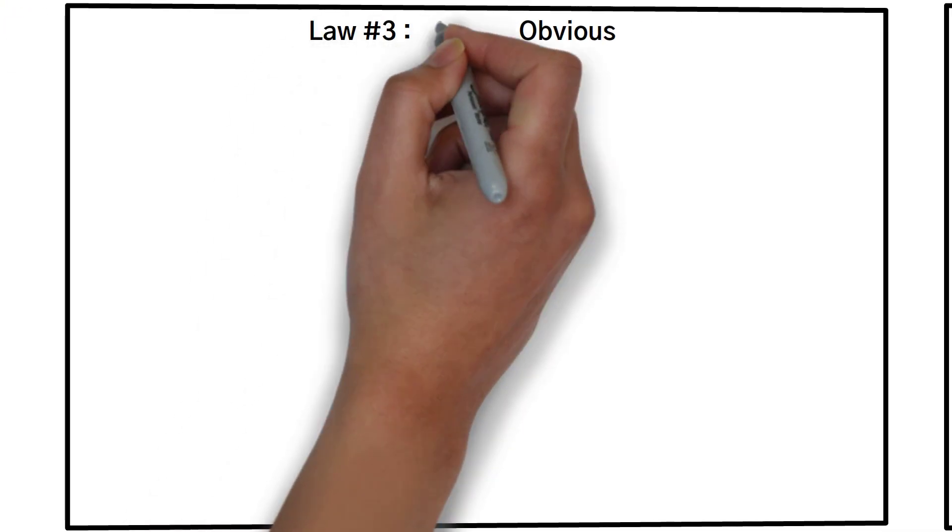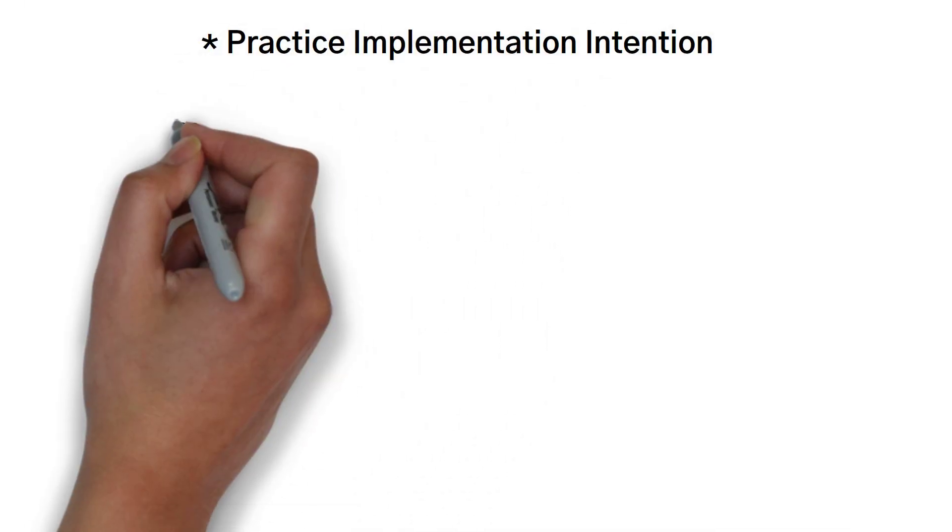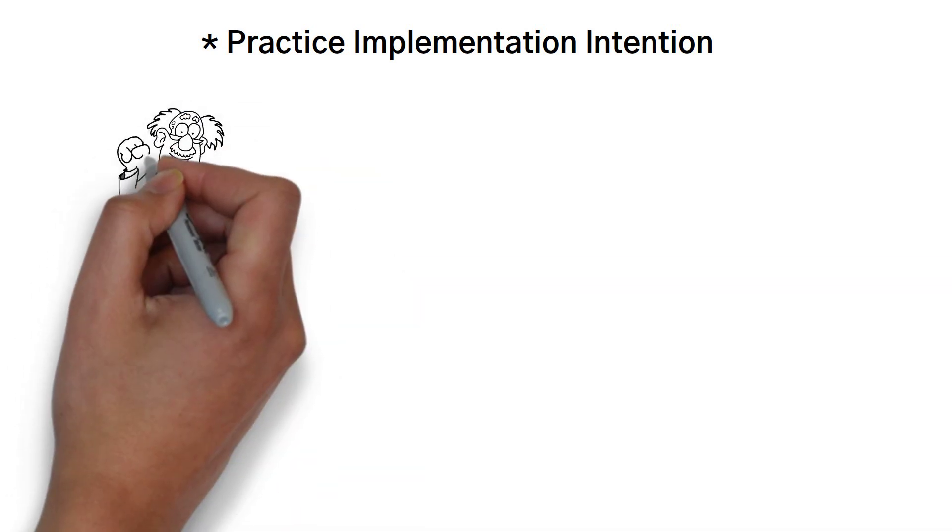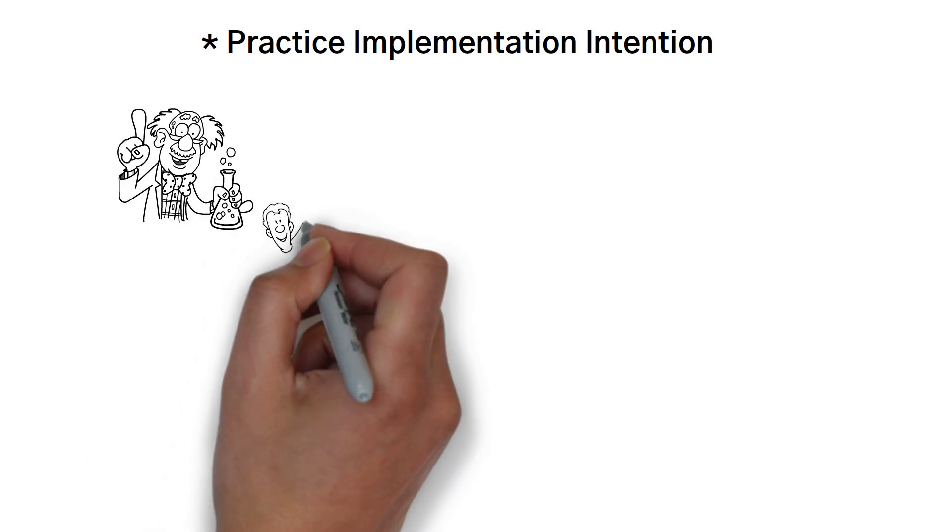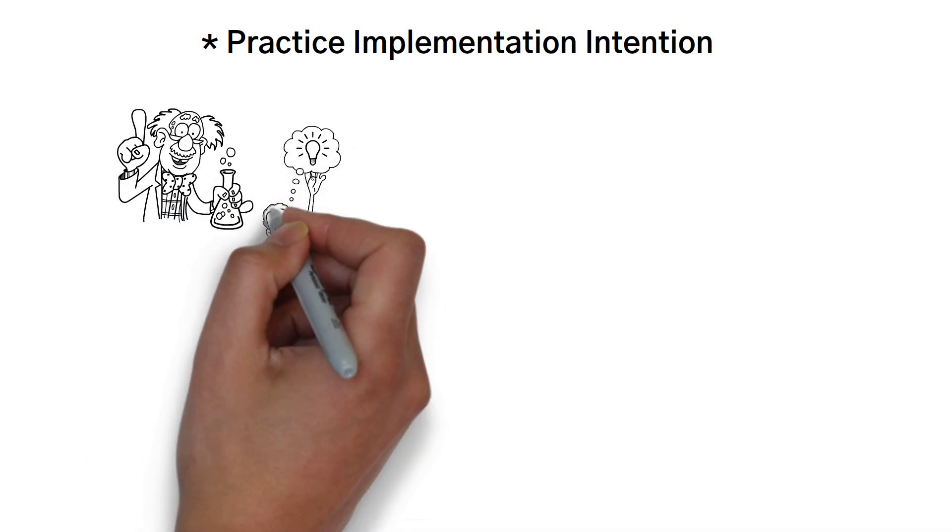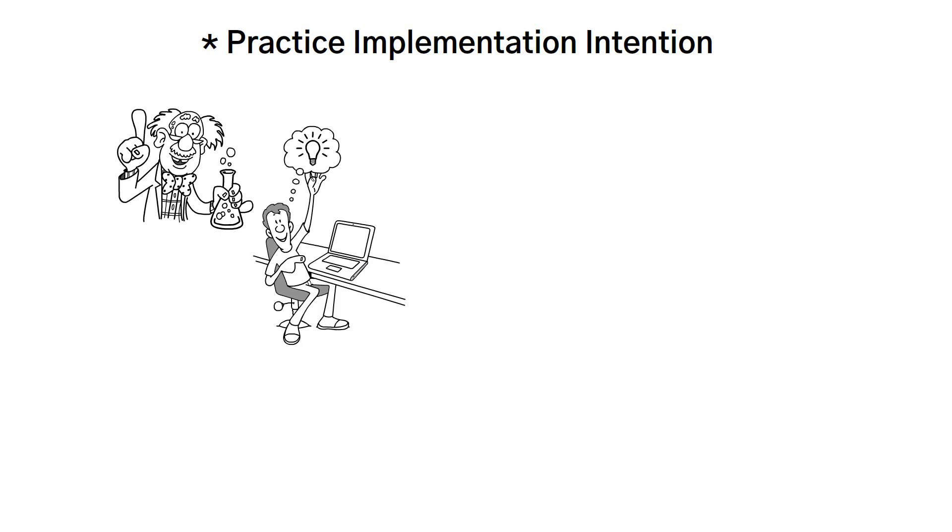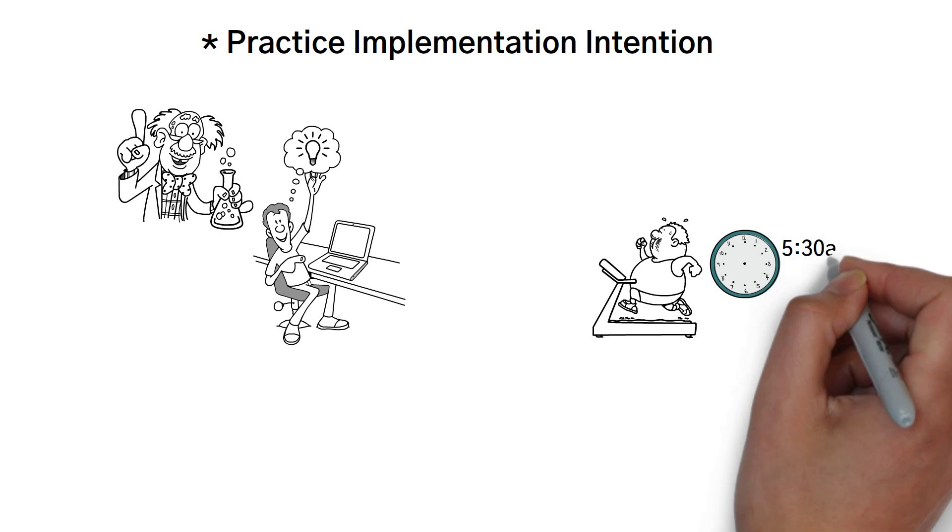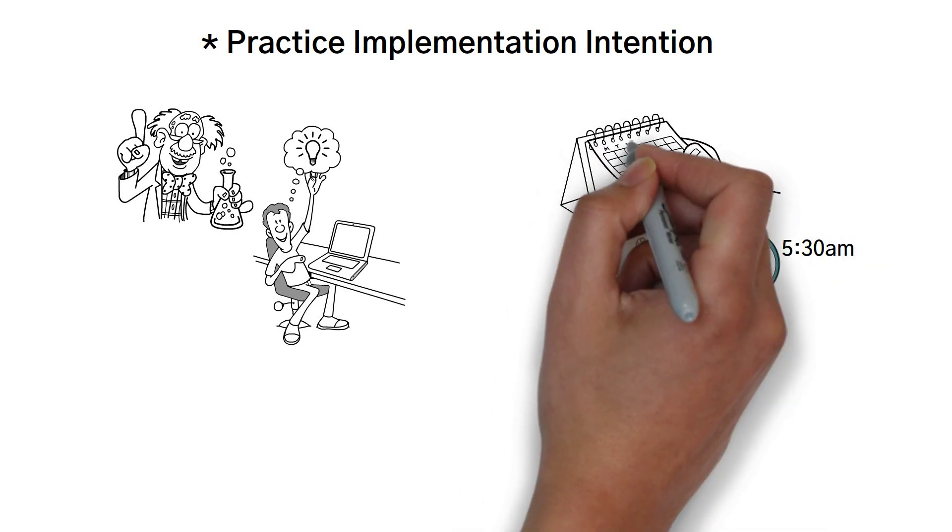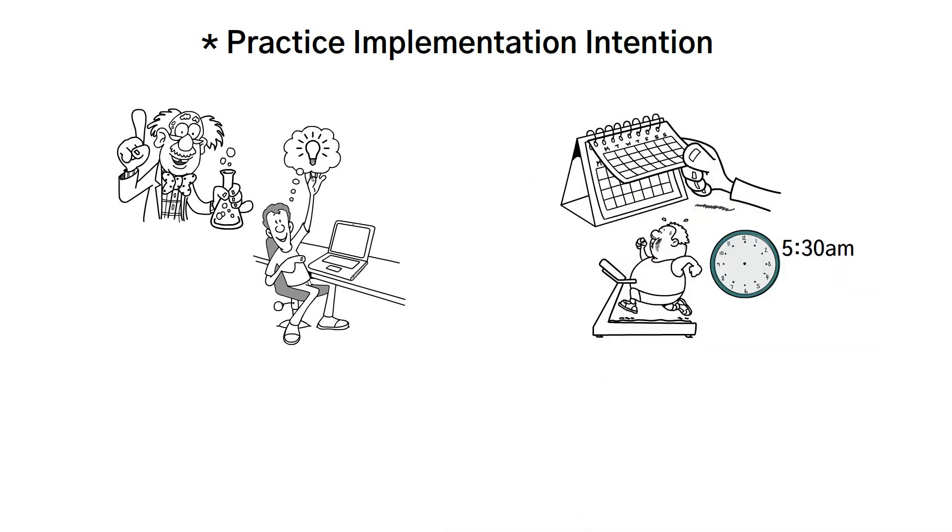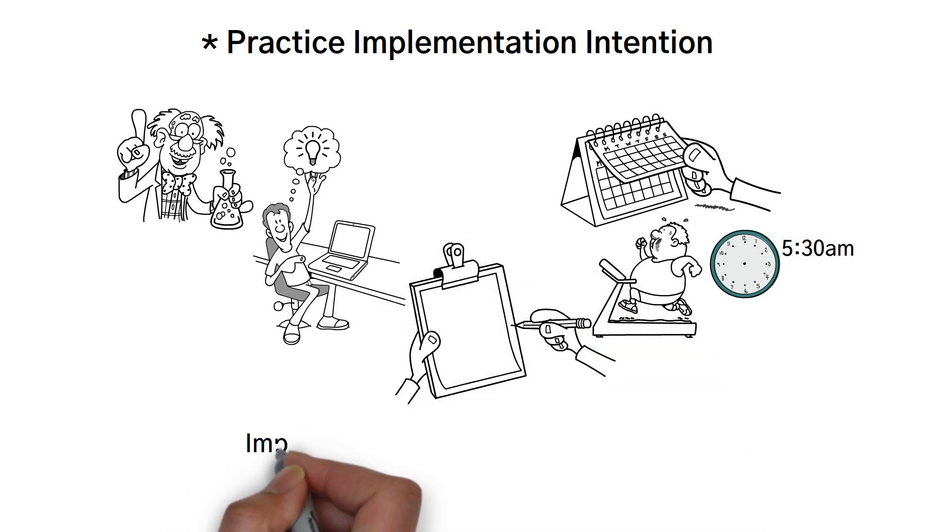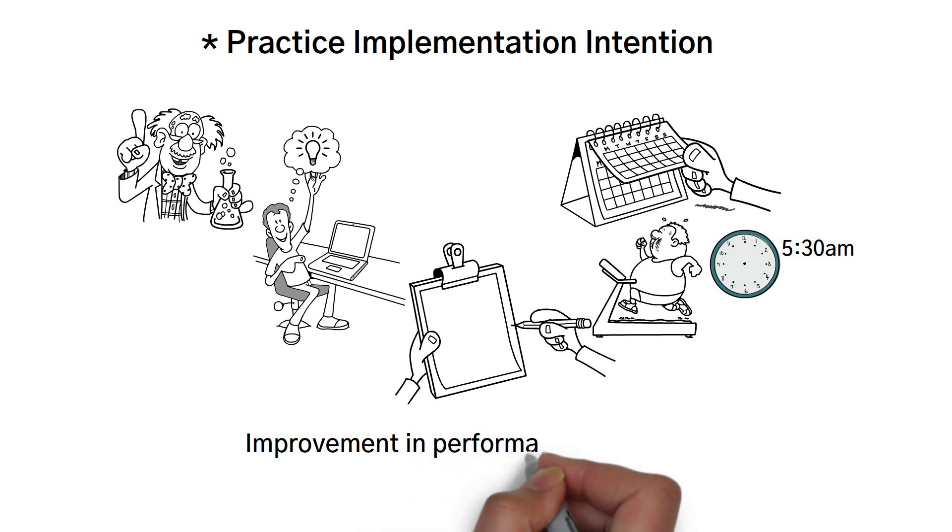Law number three is to make it obvious. Practice implementation intention. This is a scientifically backed strategy where you begin your habit building exercise with a formulated plan or a clear commitment. The idea is to declare what you want to do and when you want to do it very clearly. Example, during the next week I will go to the gym downstairs at 5:30 a.m. every single day or on Mondays, Wednesdays, and Fridays, whatever it is for you. Just the act of declaring your intention aloud to yourself and especially to others or writing it down is going to improve your performance by over 2x.